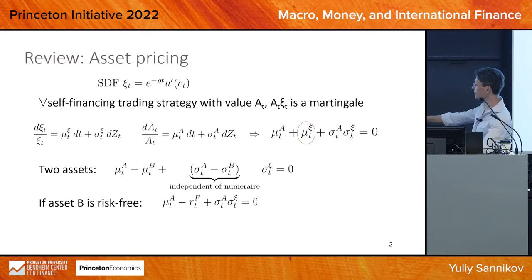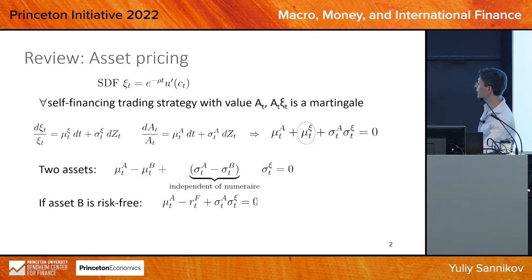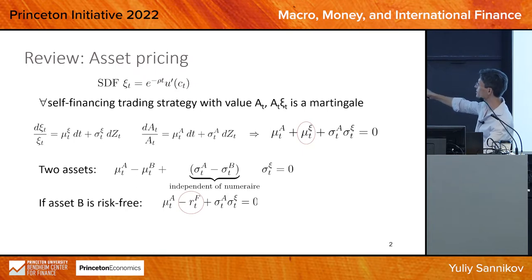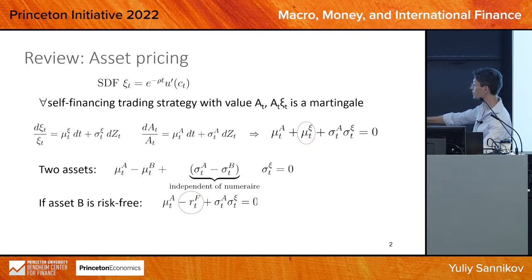If asset B is the risk-free asset, we get that the drift of the stochastic discount factor must equal minus the risk-free rate, and the excess return on asset A over the risk-free rate equals the amount of risk in asset A times the price of risk, which is minus the volatility of the stochastic discount factor.